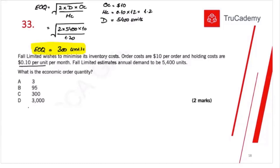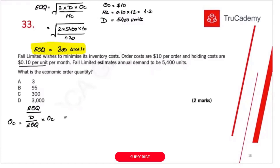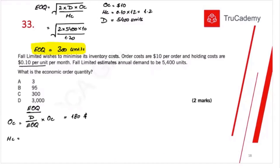Let's verify this. If we place the order size suggested by the EOQ, the ordering cost is: annual demand ÷ order quantity × ordering cost per order = 5,400 ÷ 300 × $10 = $180 total ordering cost.